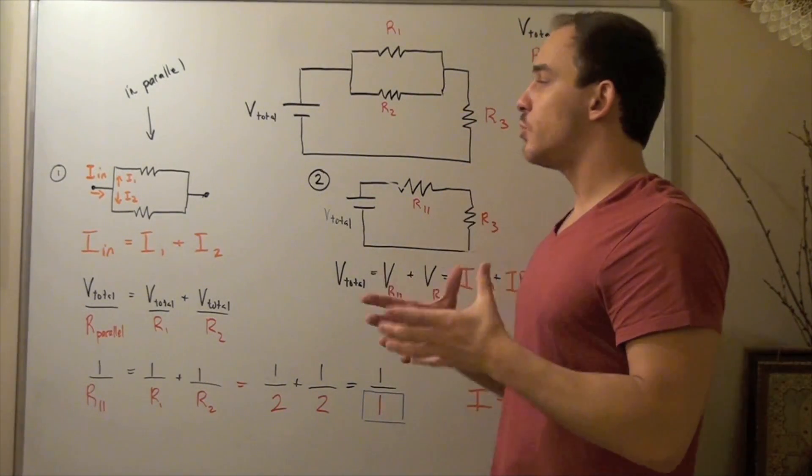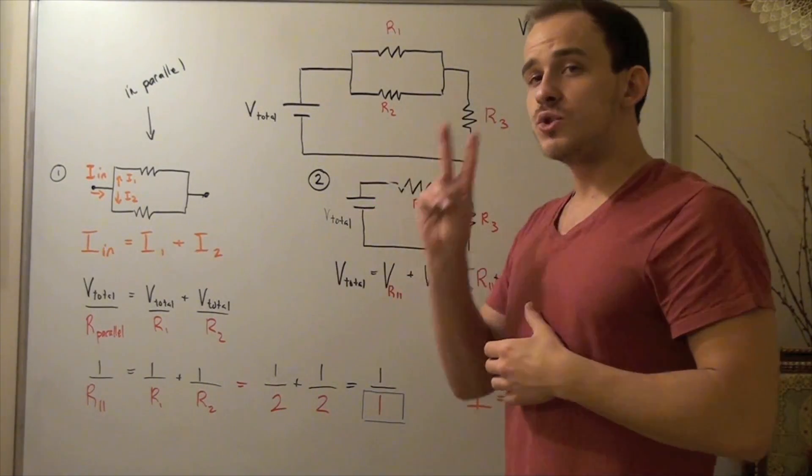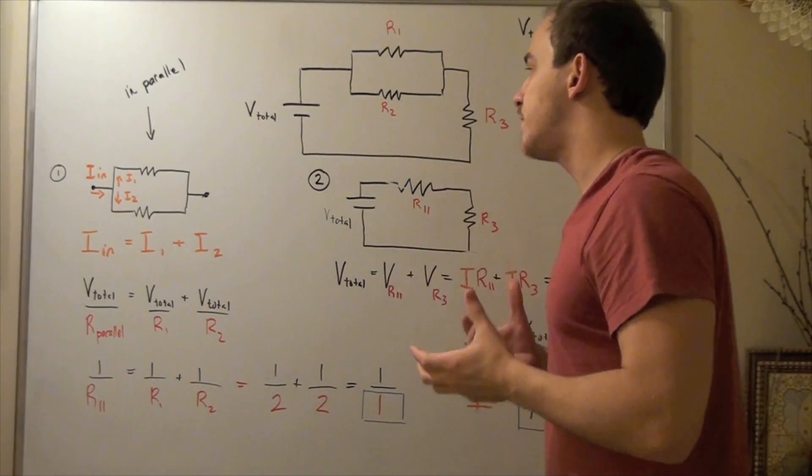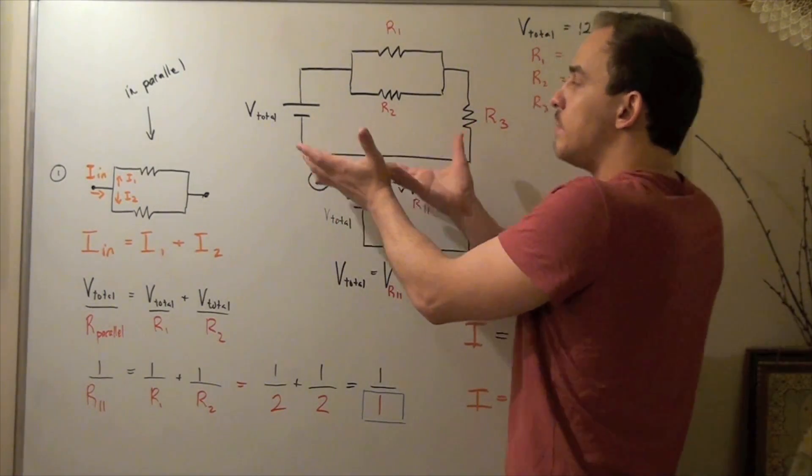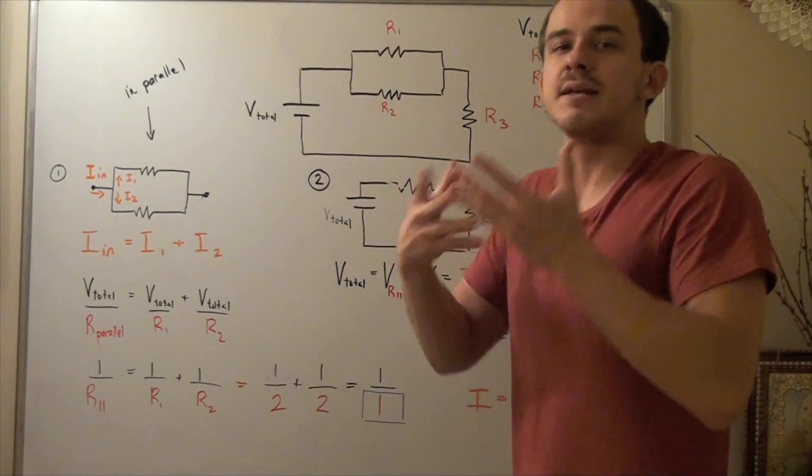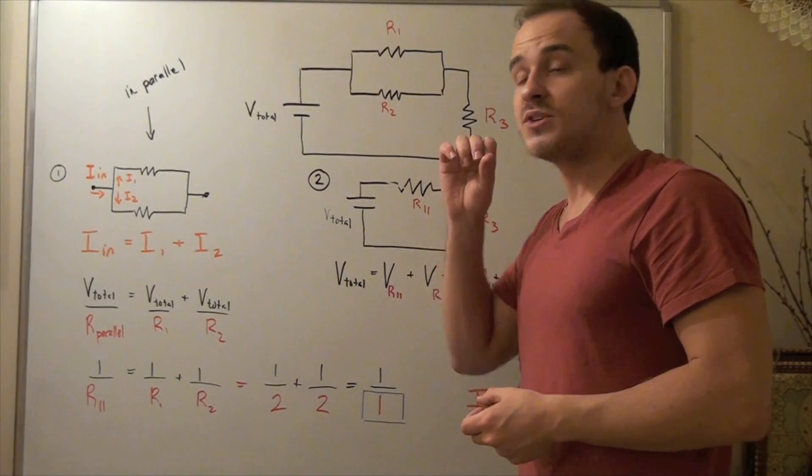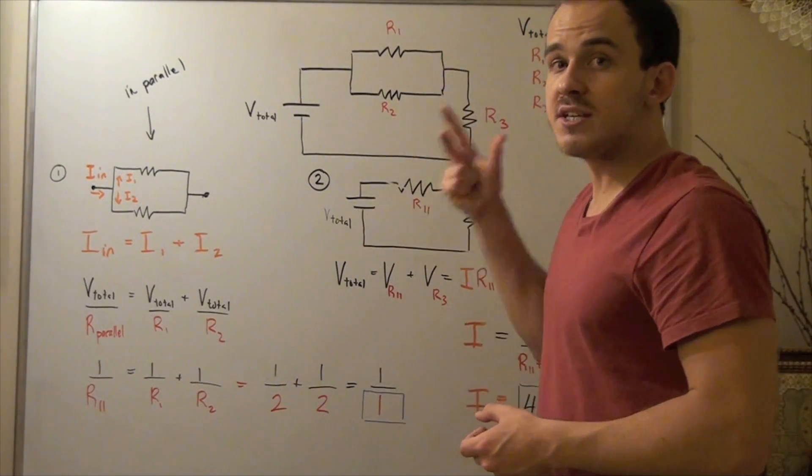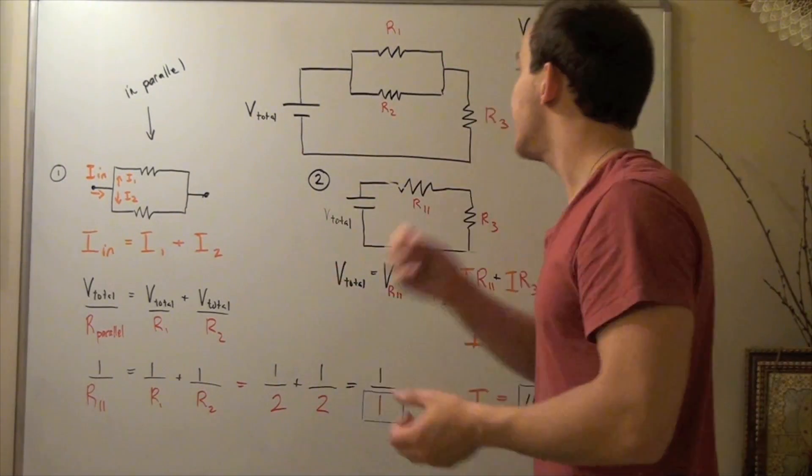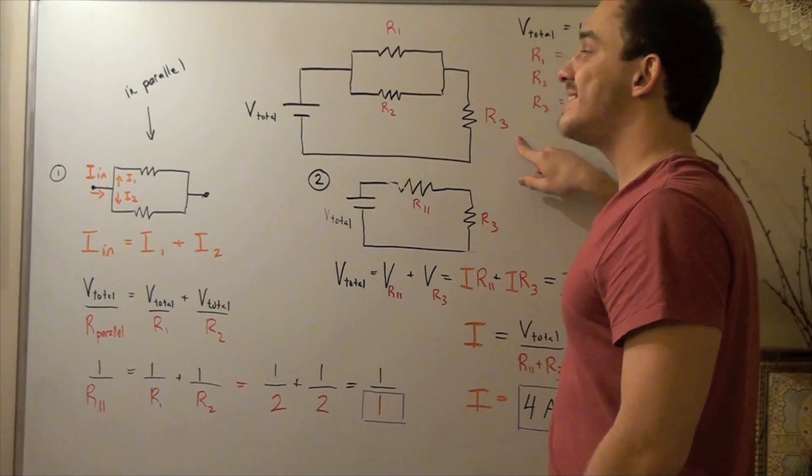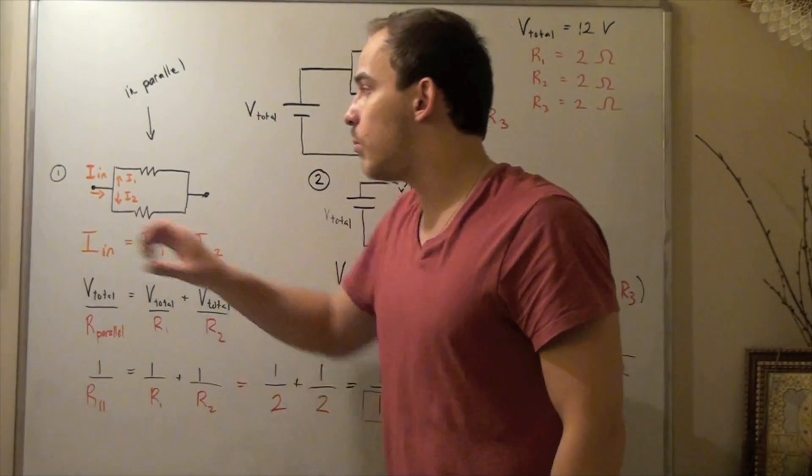To solve this problem, we have to break it down into two steps. We want to simplify this relatively complex circuit into something simpler by first finding the total resistance due to our two parallel resistors and then combine that with our resistor in series.